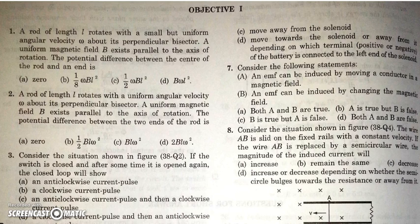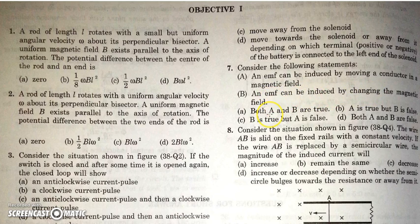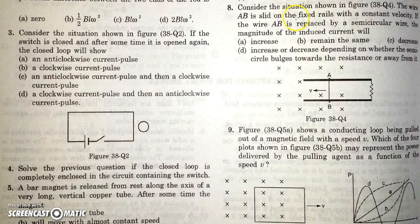In question number seven, there are two statements: EMF can be induced by moving a conductor in a magnetic field — obviously, if a conductor cuts magnetic field lines, induced EMF will be produced. EMF can also be induced by changing the magnetic field. So both statements are true.